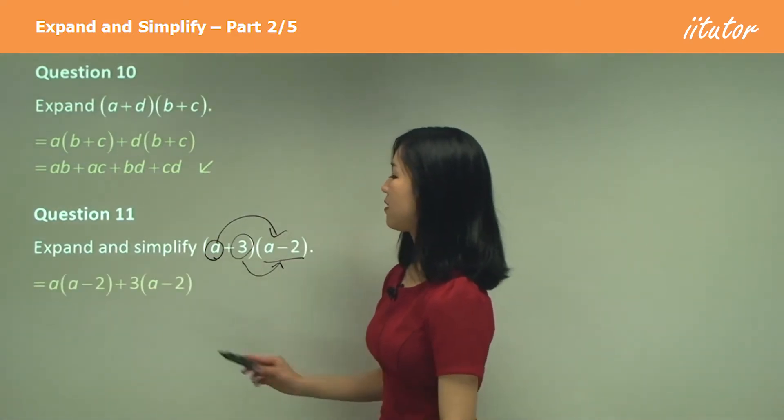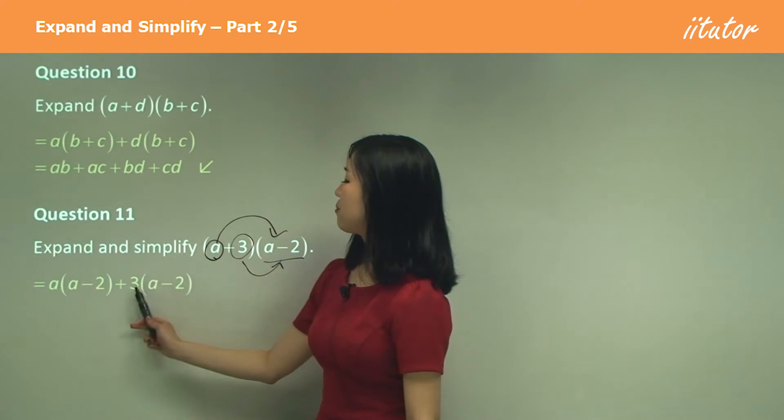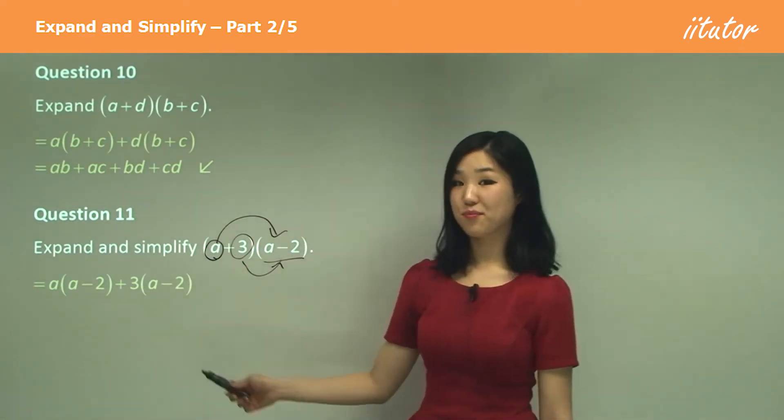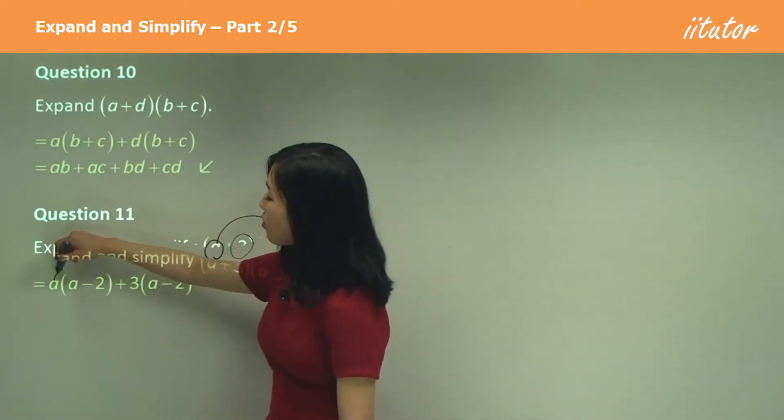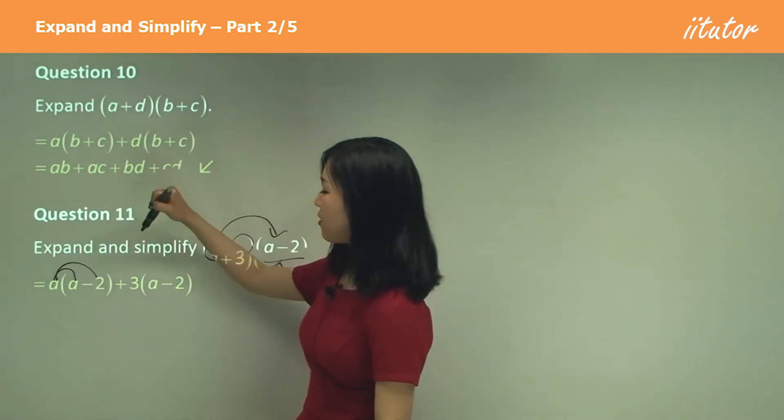So if I separate it, it looks like this. A times that bracket plus three times that bracket. And then you do your normal thing. A times A, A times negative two.